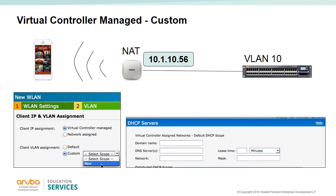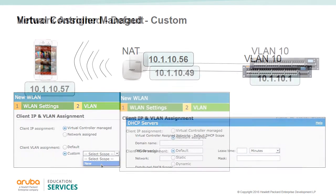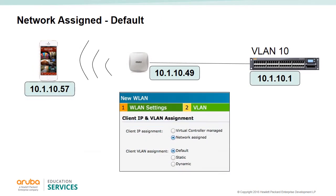The local DHCP server can be set up if you wish the IAP to assign IP addresses to users. If you select network assigned and default, the client will receive an IP address from the corporate network. In this example, the IAP gets a 10.1.10.59 address from the corporate DHCP server, and the user associates to the IAP and gets a 10.1.10.57 address on the same subnet as the IAP.